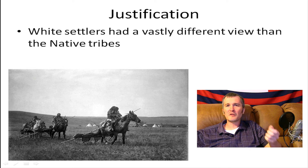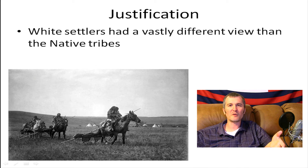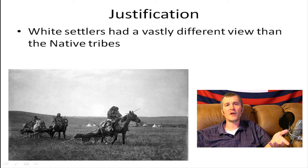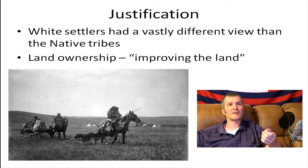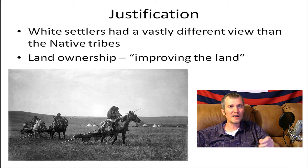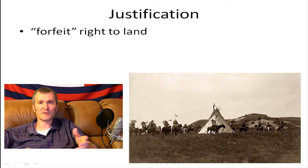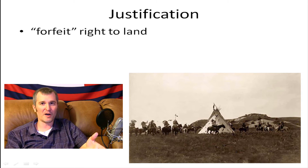To the white man, owning land was everything. Owning land made you respectable, made you worthy — there was wealth and value in it, and working the land was something God intended for you to do. So these are two vastly different world views and they're going to collide. Land ownership to the white man meant improving the land. If you weren't doing anything with the land, you basically forfeited your right to it. This was one of the flimsy little justifications they used.